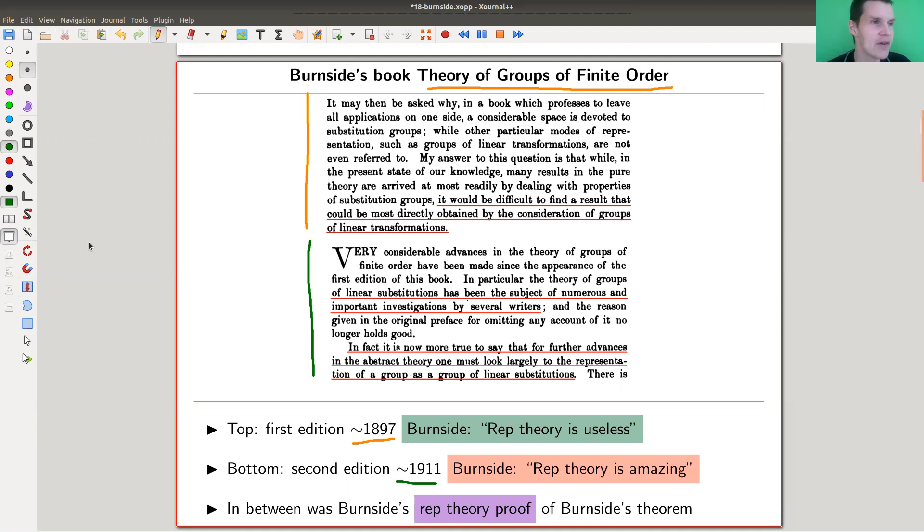So let me read it out. In the first edition, "it would be difficult to find a result that could be most directly obtained by the consideration of groups of linear transformations." Linear transformations—the old word for representations. Basically, this says it's useless, right? It's just a nice way of saying I think it's useless.